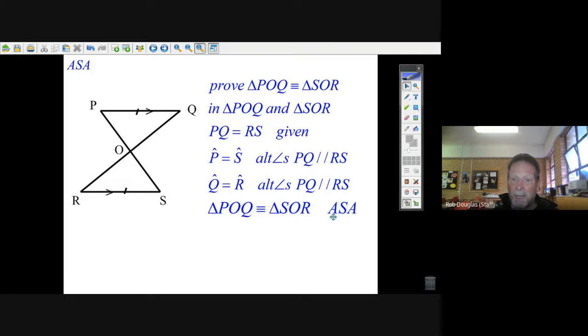reason is Angle-Side-Angle. We listed what was given, we found two other things using the reasons, and now we can say the triangles are the same in every way because we've matched up an angle, a side, and an angle.